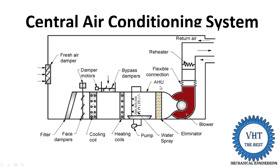When humidification is done, the Eliminator is required. The Eliminator absorbs water particles — during humidification, some water particles travel along with the air. The Eliminator absorbs those water particles and prevents them from being supplied into the rooms along with the air. Sometimes the return air from the rooms is mixed with the fresh air to reduce the temperature of the supplied air, helping to maintain the room temperature.